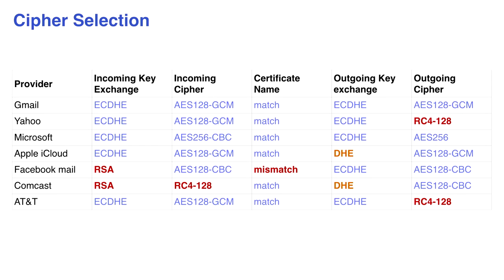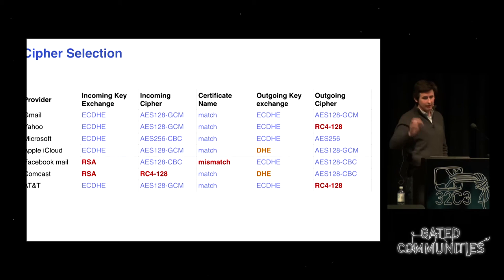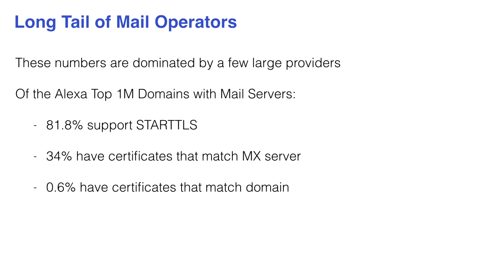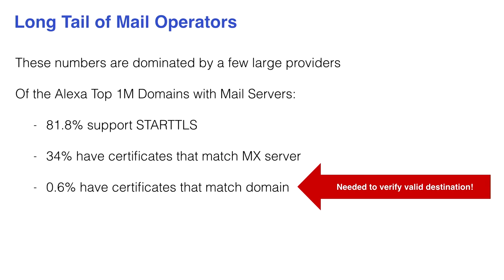Bei großen Anbietern heute benutzt man sehr exotische Ciphers. Man sieht hier, es wird immer noch RC4 verwendet. Facebook hat zum Beispiel ein Zertifikat das ungültig ist – zwar ein gültiges Zertifikat, aber es passt nicht zu ihrem Mail-Server. Das sind die zehn größten E-Mail-Versender der Welt. Yahoo unterstützt immer noch RC4. Von den Top einer Million Domains unterstützen etwa 80 Prozent STARTTLS, 34 Prozent haben ein Zertifikat das zum MX-Server passt, aber nur 0,6 Prozent haben ein Zertifikat das wirklich richtig passt.